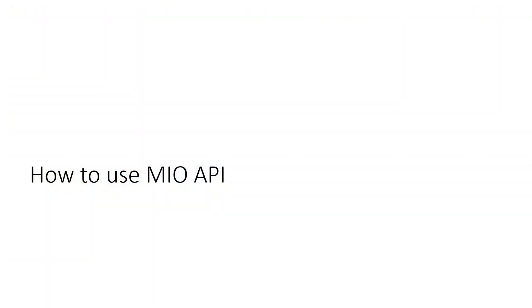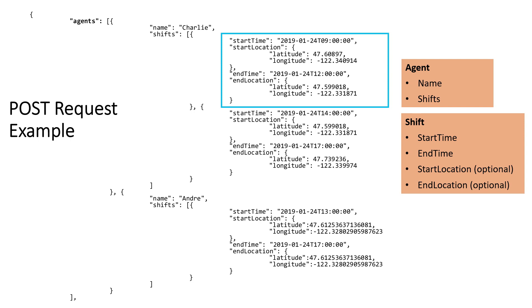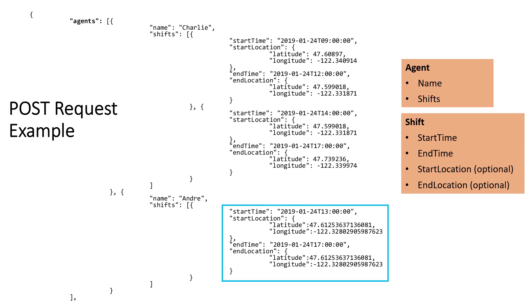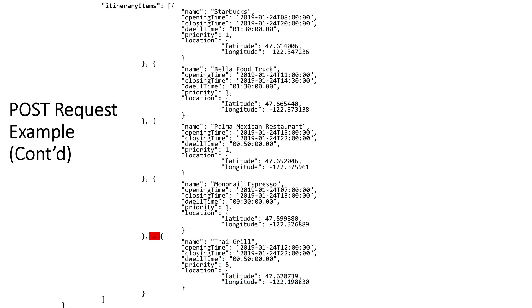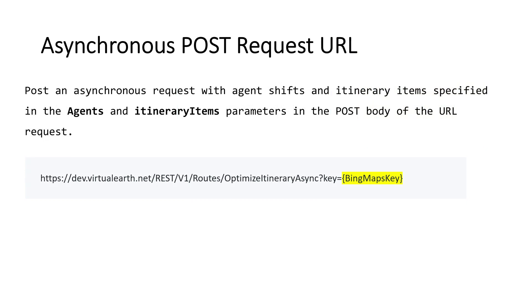Now I'd like to give you a quick walkthrough of how to use the Multi-Itinerary Optimization API. Here is an example POST request body in JSON format. We need to define information about the agent and their shifts. In the POST body, we define two shifts for Charlie and one shift for Angie, with the start and end locations and times of each shift. We also need to define the operating hours, dwell time, and priority of each location. Once you have the POST body defined, you can post an asynchronous request with the agent shifts and itinerary items defined in the POST body. You can use this HTTP POST request URL with your own Bing Maps API key.